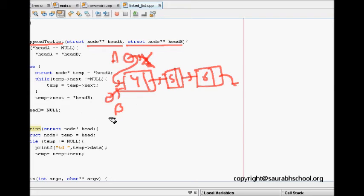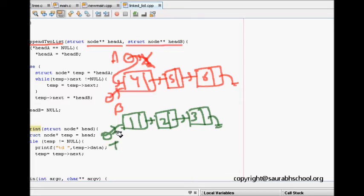So in all other cases, what we need to do? If we have a list, say one, then we have a two, we have a three. So we make temp equal to head A. And then what we do: while temp next is not equal to null, so we make temp equal to temp next. Temp next is still not null, we make temp equal to temp next. Now temp next is null, so what we do: we make this temp next equal to head of B.